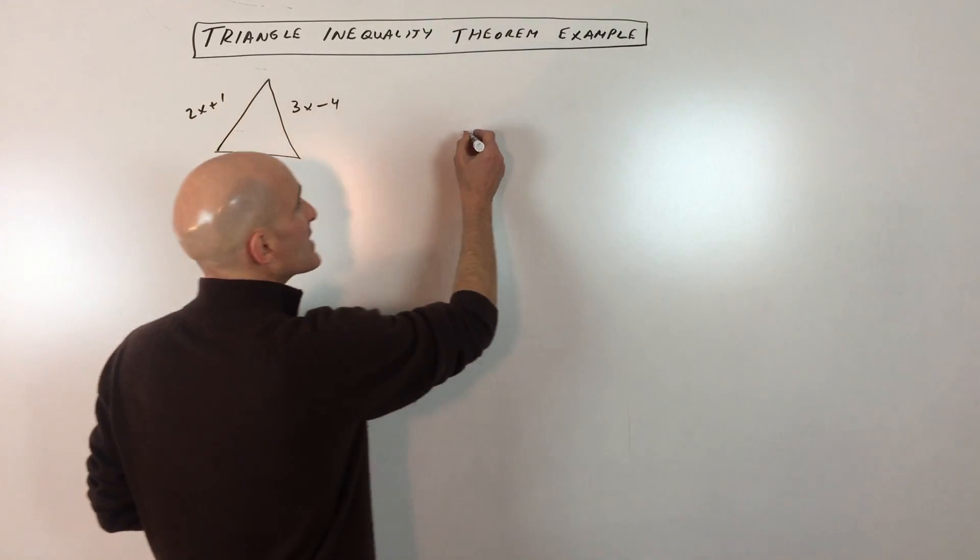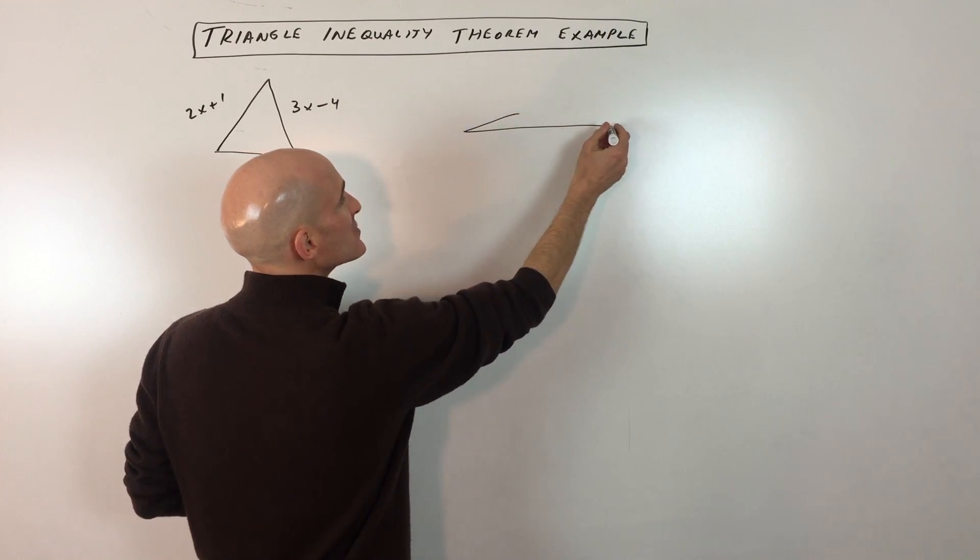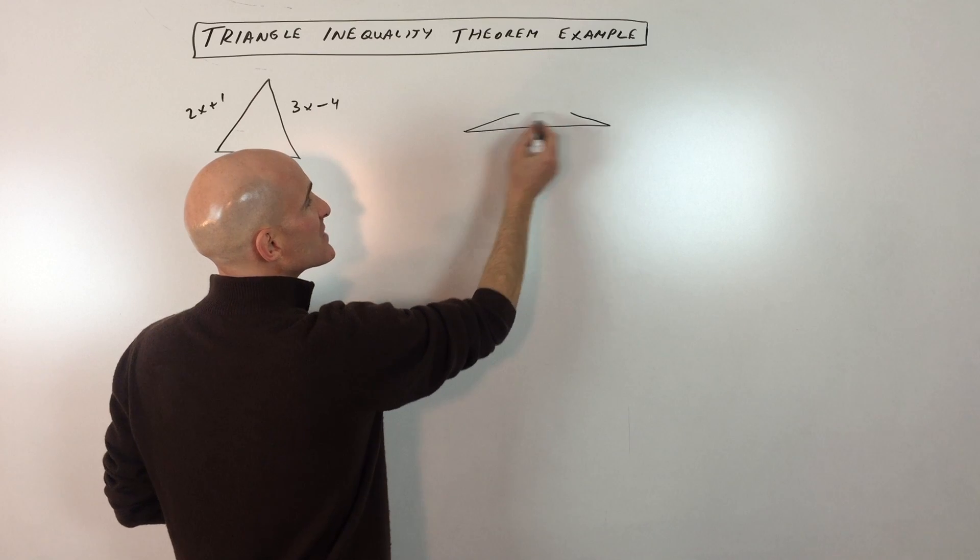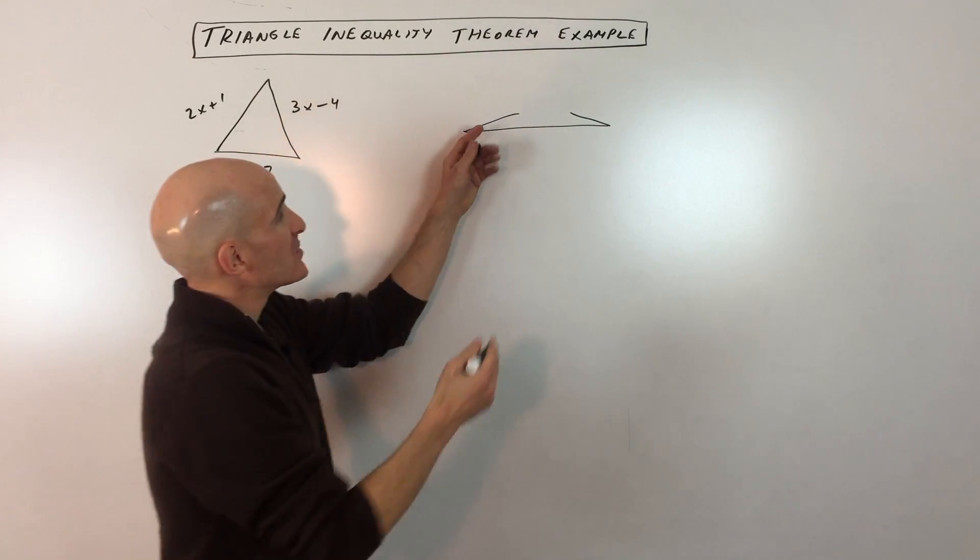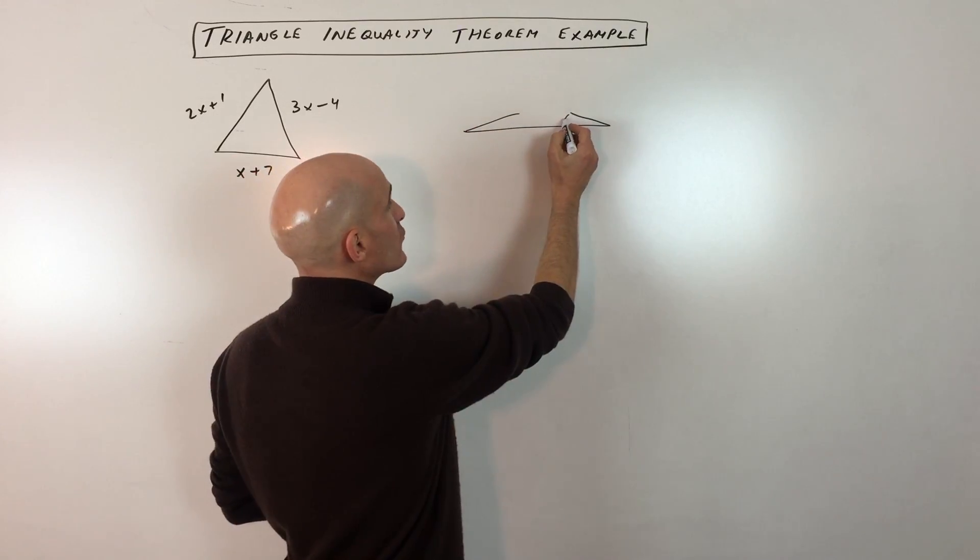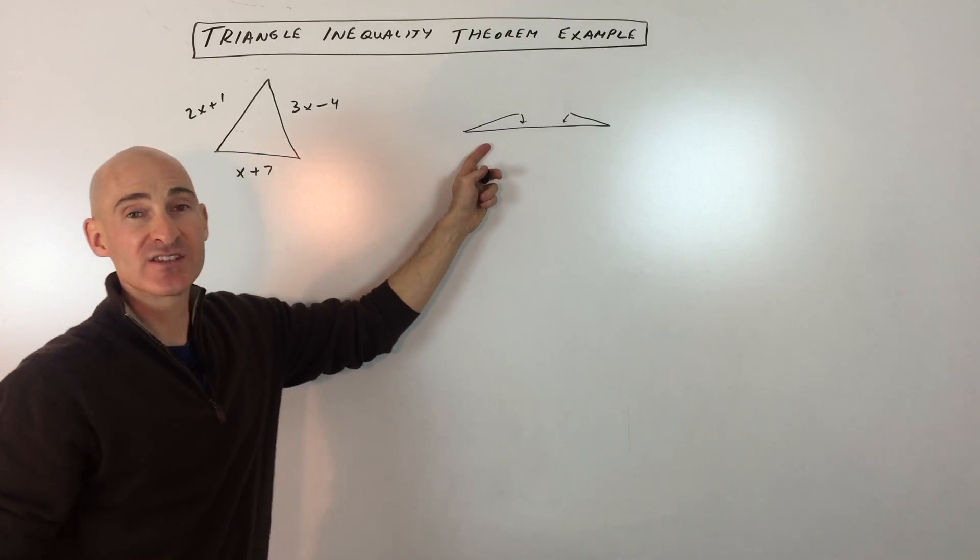A way to visualize this is, say for example this is one of the sides and here's the other two sides. If these other two sides don't add up to more than the third side, you can see there's not going to be a triangle here. Even if you rotate these sides down like this, they're not going to be able to reach to span that distance of that third side.